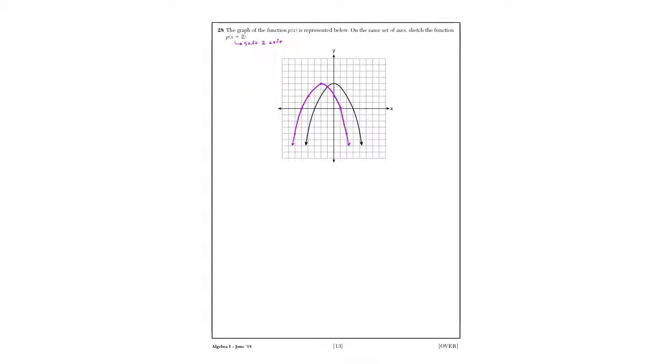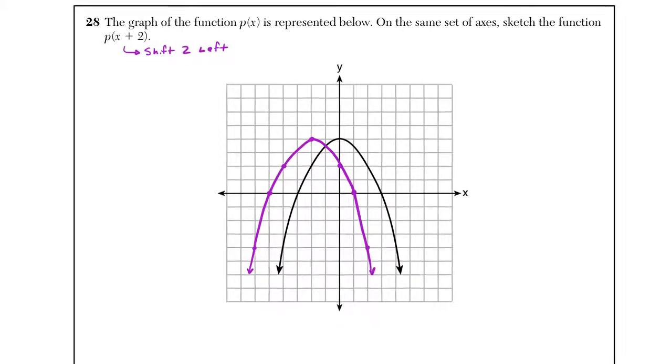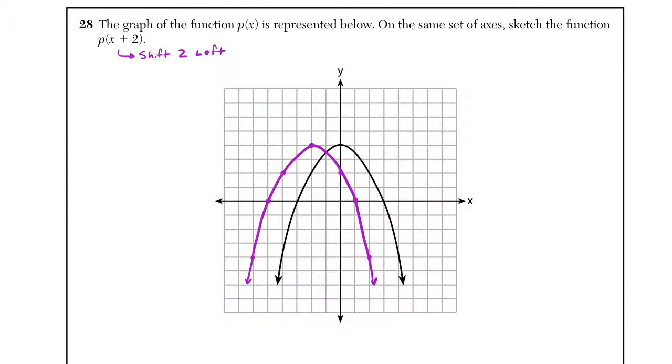And last one for this section, for 28, a transformation question. Usually we're asked to identify what the transformation is, but in this case they wanted us to graph it. You might be saying, how could I graph something? I don't have any rules, any tables. I can't type this in my calculator. But really understand what's going on here, and it's actually pretty simple. First of all, this would apply our IHOP rule.